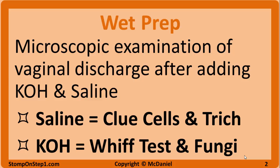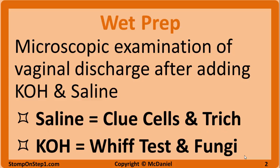Wet prep, also known as the wet mount test, is a microscopic examination of vaginal discharge used to differentiate between different types of vulvovaginitis. The vaginal specimen is obtained using a speculum and a q-tip similar to how one gets a pap smear, then the specimen is rubbed onto a glass slide. One half of the slide has a drop of saline added to it while the other half has a drop of 10-20% KOH added. When saline is added it makes it easier to view clue cells for BV and flagellated motile cells for trichomonas. The KOH kills bacteria and vaginal cells leaving only yeast cells.